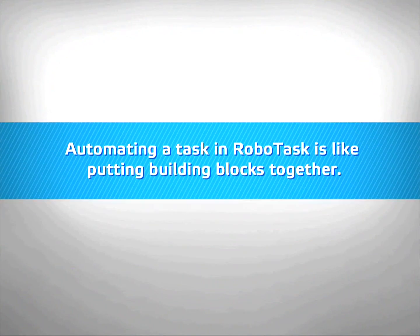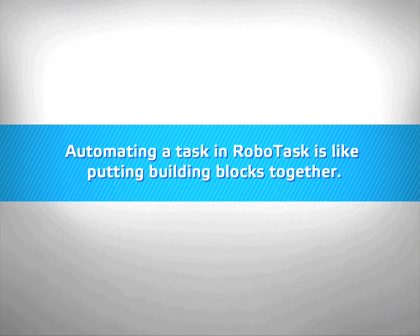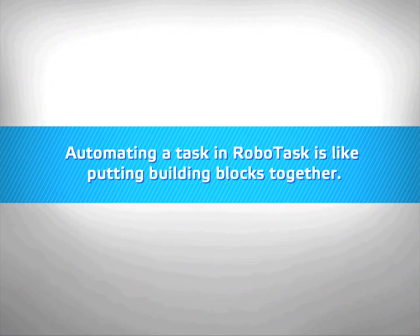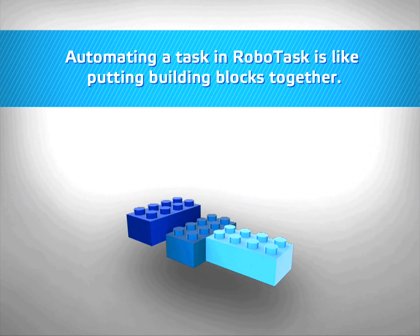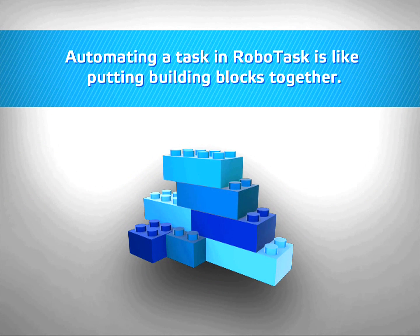Automating a task in RoboTask is like putting building blocks together. You have action blocks, condition blocks and command blocks. You don't need to have any special knowledge — all you need to do is put the sequence of actions in the right order.